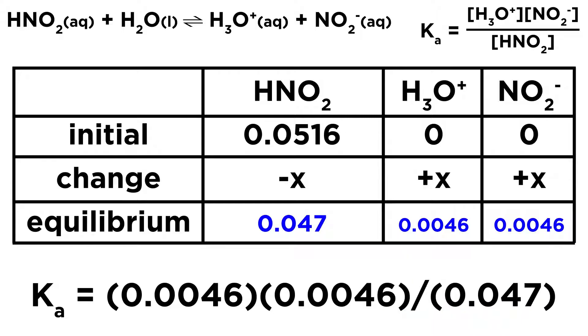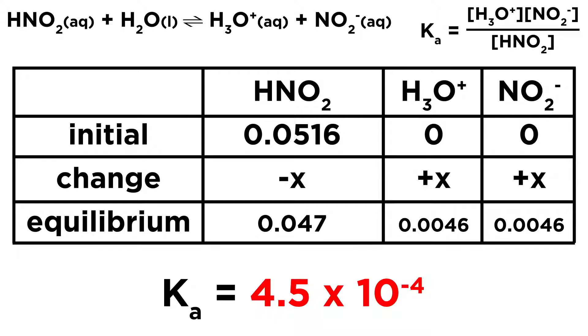And now it will be very easy to calculate Ka. We take our Ka expression up there. We know it's going to be hydronium concentration times nitrite concentration over nitrous acid concentration. And that is 0.0046 times 0.0046 divided by 0.047. Those are the numbers we just got from the equilibrium row of our icebox. And we do the arithmetic. And the Ka value is 4.5 times 10 to the negative 4.